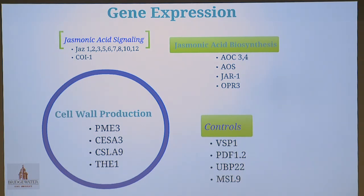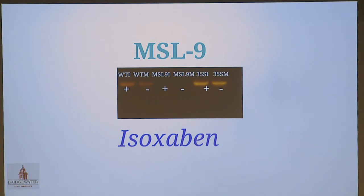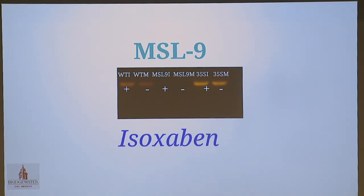I tested four different kinds of genes, looking at jasmonic acid signaling pathways, jasmonic acid biosynthesis, cell wall production, and four controls. The first picture shows the MSL9 gene as an internal control. You can see two bands missing from the MSL9 mutant line — there should be no bands because there's no MSL9 in that plant, which confirms my experiment was correct. The 35S line stands for the overexpression line, and its band is a lot brighter than the wild type, confirming there is more MSL9 in the 35S than in the wild type.